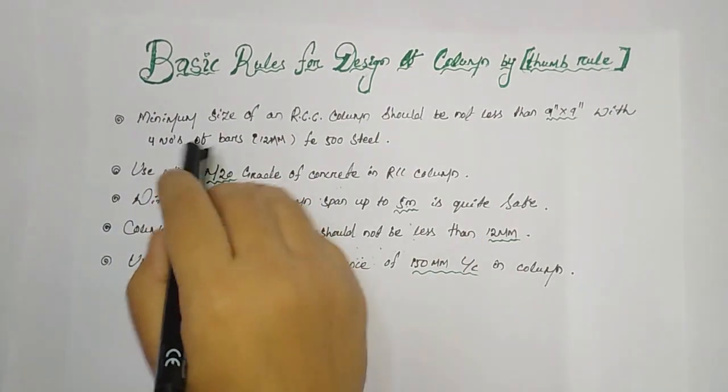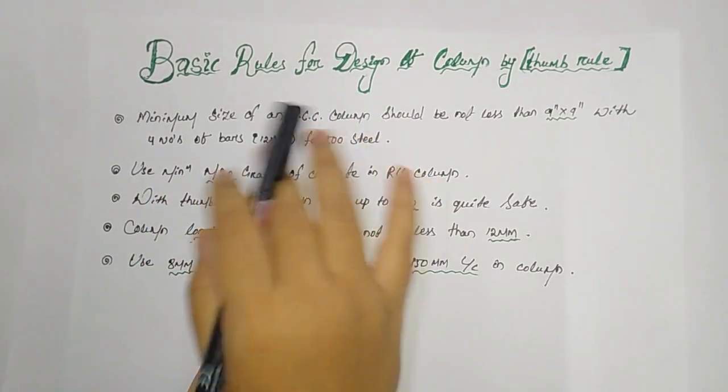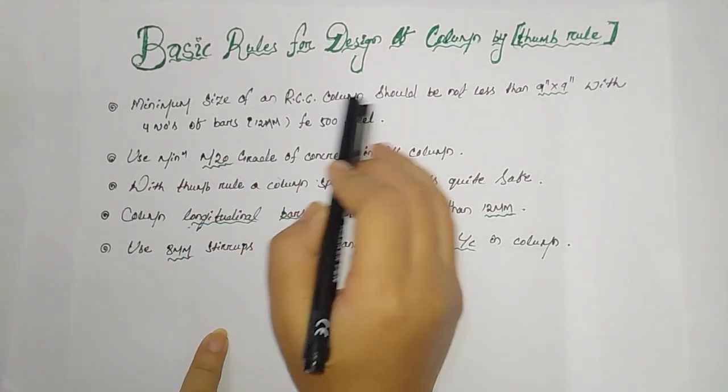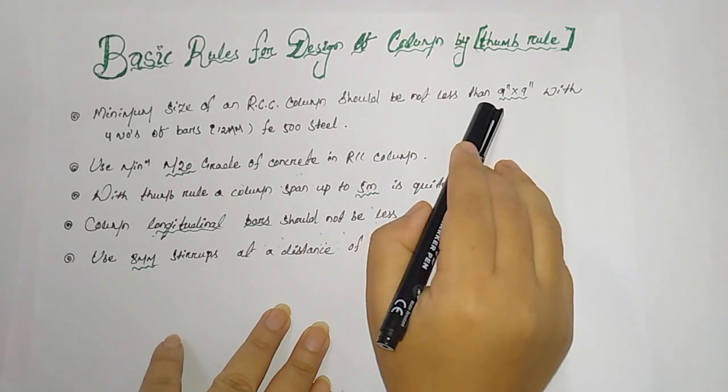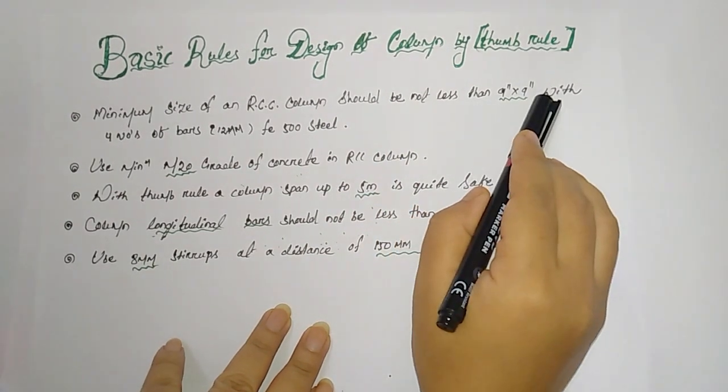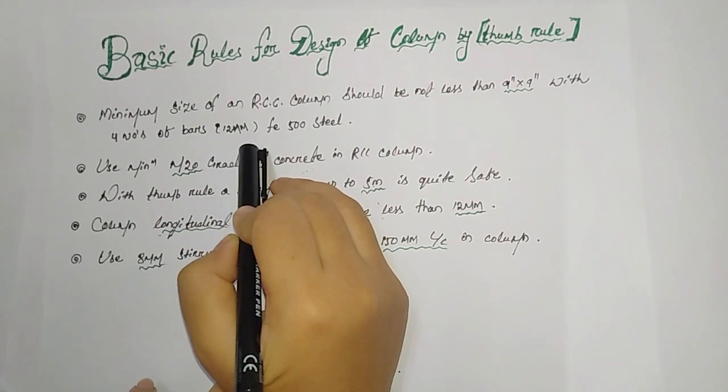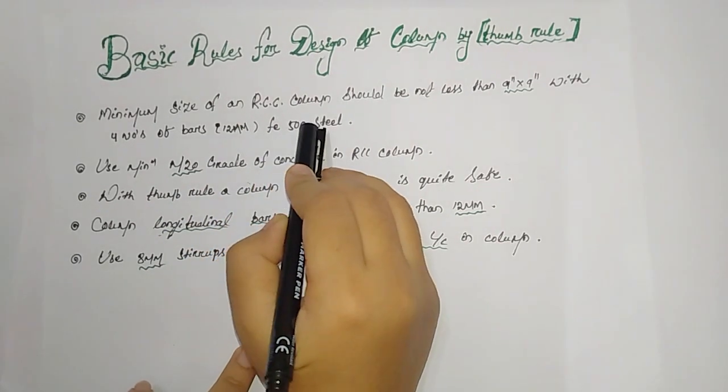First, the minimum size of an RCC column should be not less than 9 inch by 9 inch with four number of bars, 12mm each, of Fe 500 steel.